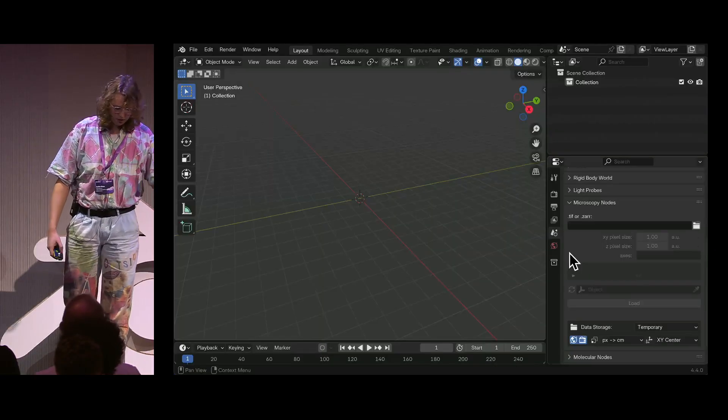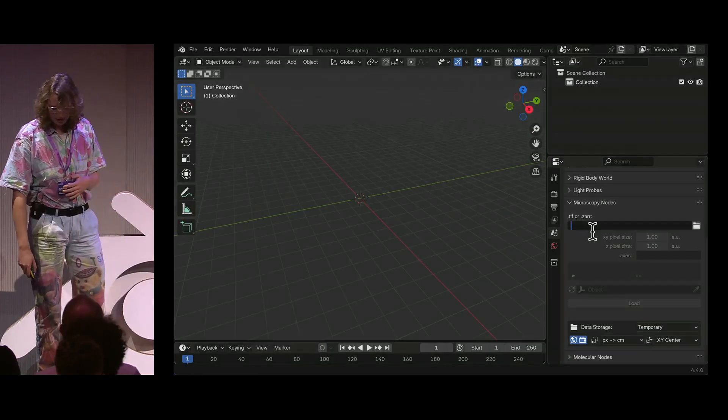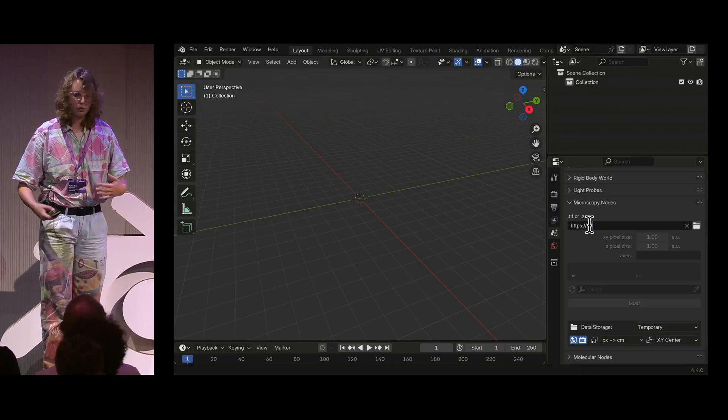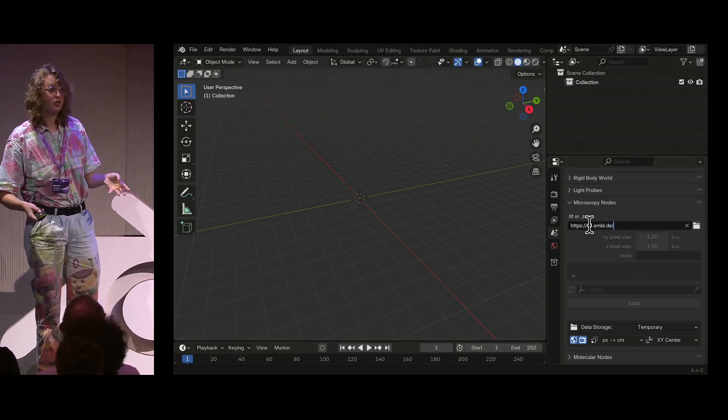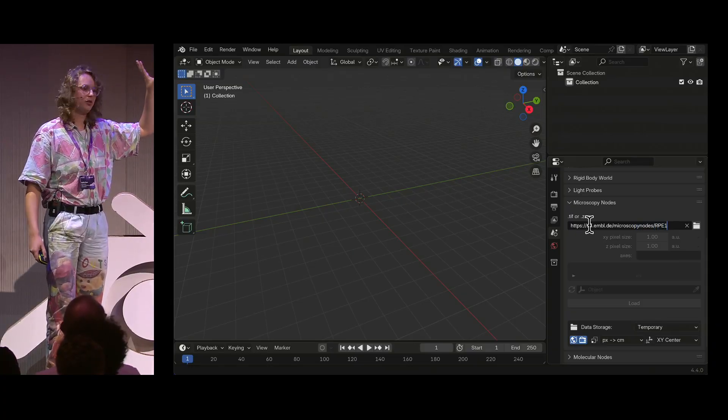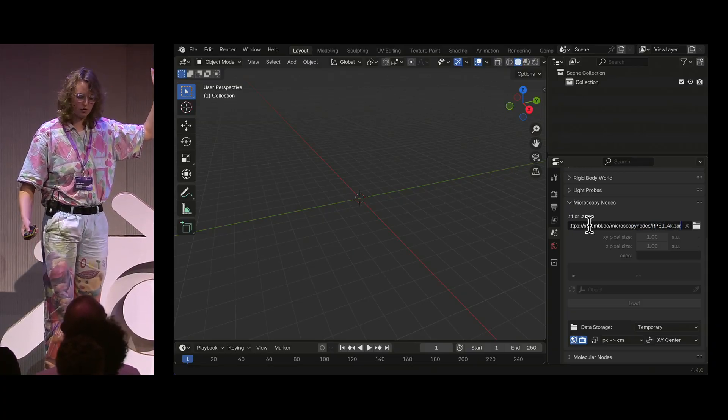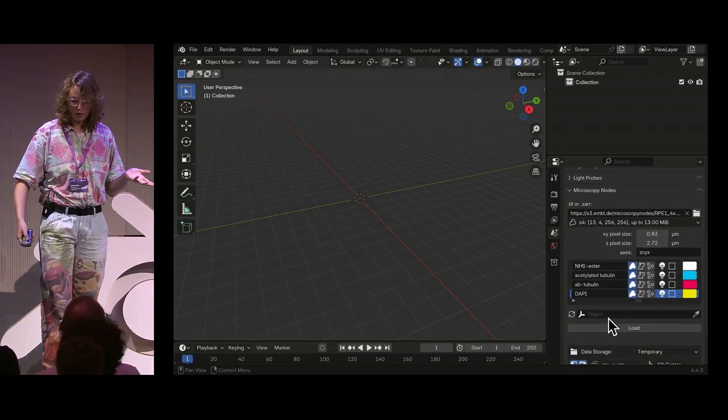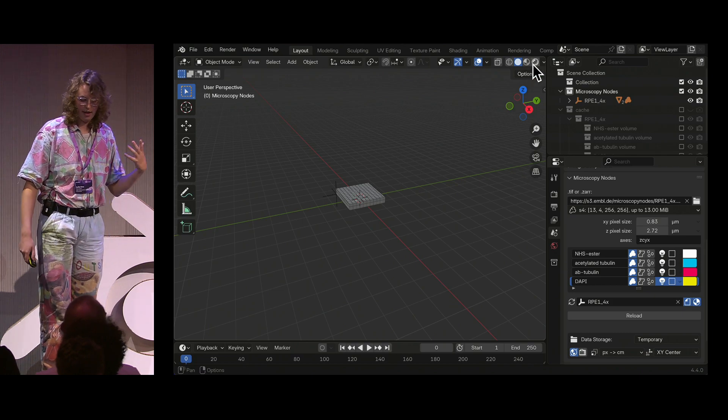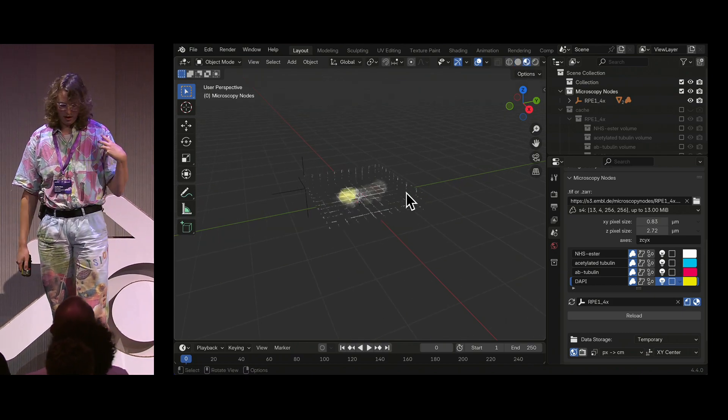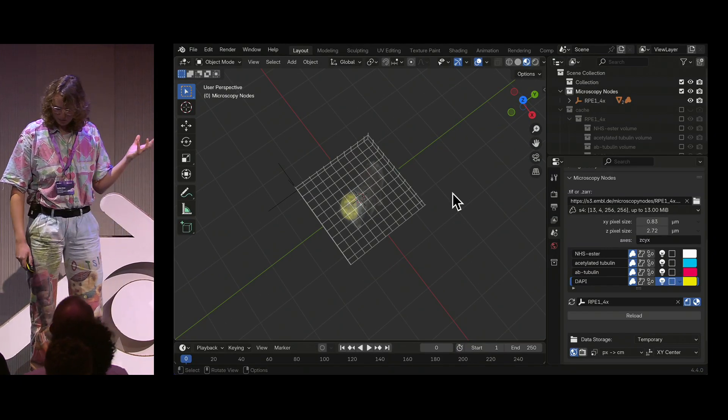So how this looks is here we're in Blender, and we can put in a URL of an open dataset. So this is one of my tutorial datasets, so you can actually follow along with this dataset at home. And just once you install it from the microscopy nodes from the Blender extension platform, you can get it. And then here right now we'll just load it immediately, and we'll get a little blob of data. And this is a human cell that was imaged by a friend of mine.